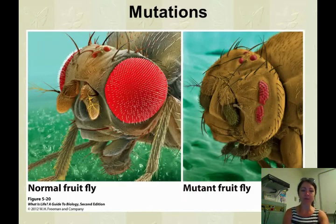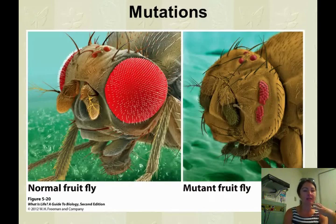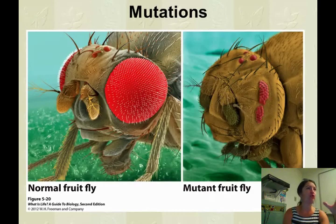And so what we see in the normal fruit fly, the normal-sized eyes, normal-sized appendages. In the mutant fruit fly, its eyes are greatly reduced and it doesn't have those feeding appendages or the feeler appendages.